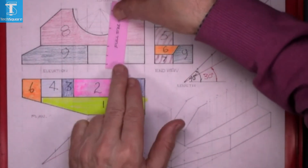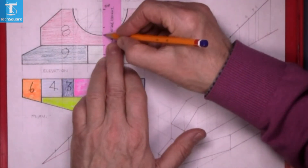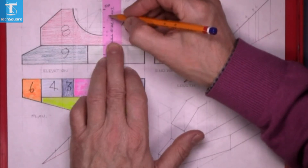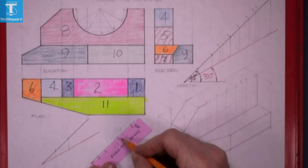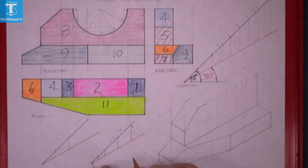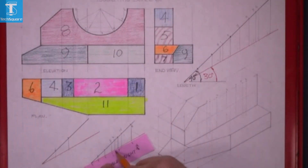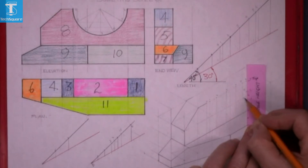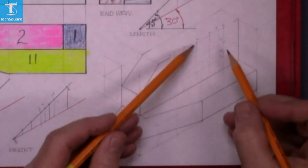Now we're taking the heights of the circle. So again using the height template, mark the points and number them. Set them off on the 45 degree line, draw vertically down, transfer your height to the template and then onto your drawing. Using your 30 degree set square, draw the lines in. Now to find the points.